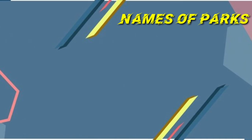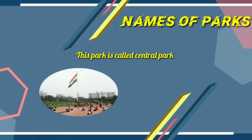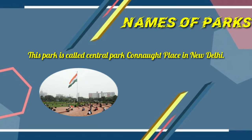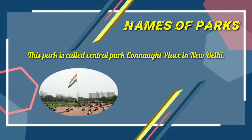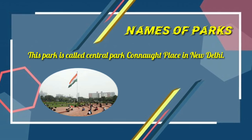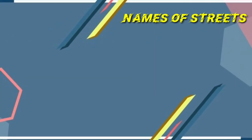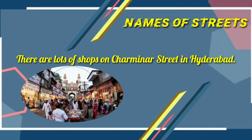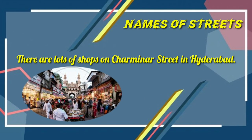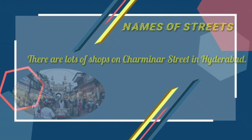Names of parks — Example: 'This park is called Central Park, a famous place in New Delhi.' We use capital letters for the name Central Park, but when we use the word 'park' normally, we use small letters. Names of streets — Example: 'There are lots of shops on Charvina Street in Hyderabad.' The name of the street — Charvina and Street — are written in capital letters.